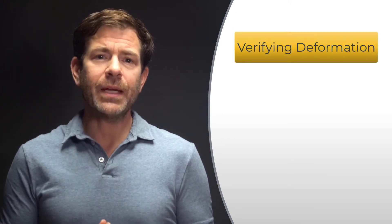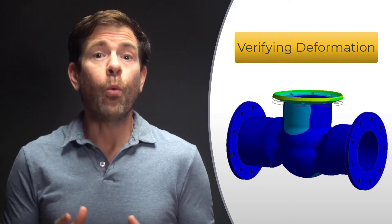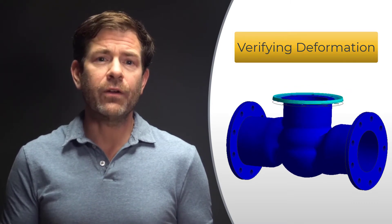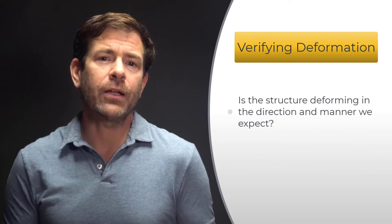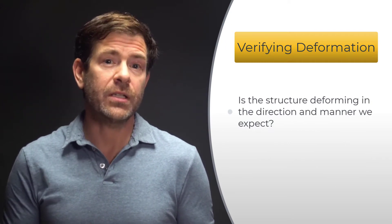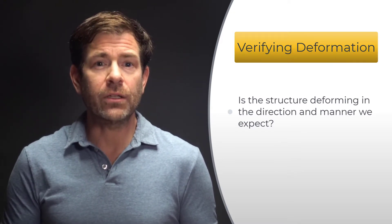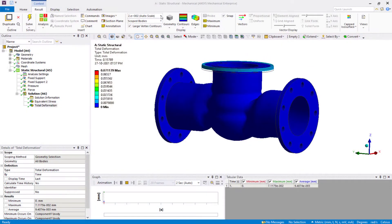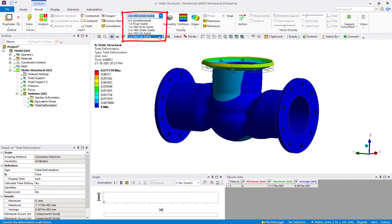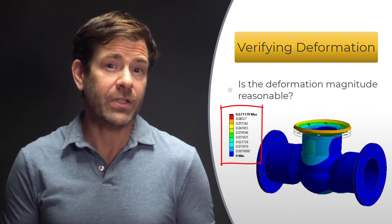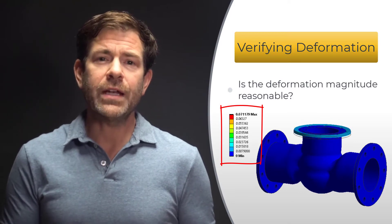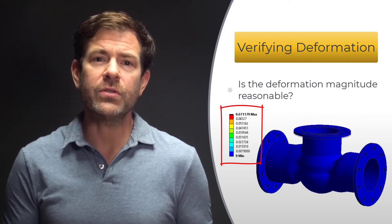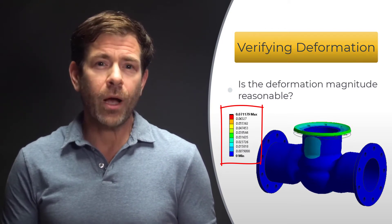Let's begin with our first check after obtaining results: verifying the deformation. In ANSYS Mechanical, users can view animations of deformed shapes while analyzing deformation results. It's good practice to verify these animations and ensure the structure is deforming as expected. Note that in a linear analysis, animations are exaggerated by default so users can understand the deformed shape. Users can change the deformation scaling between actual scale and other scale factors. The deformation magnitude should also be compared with a rough estimate. Verifying deformation results helps identify whether applied loads and supports are correct and can expose common problems like over-constraining the model.